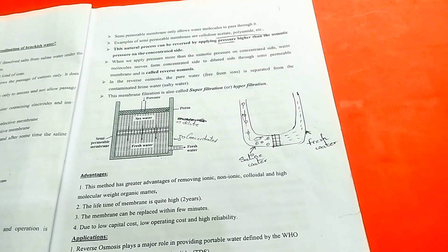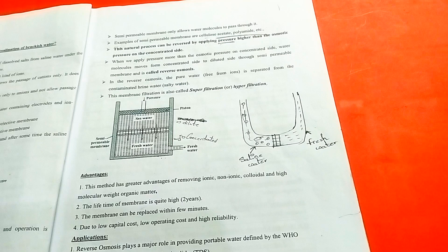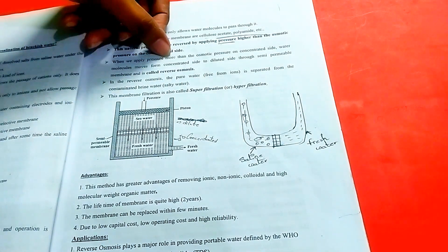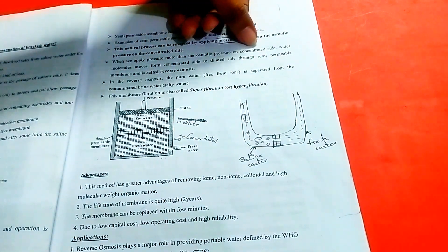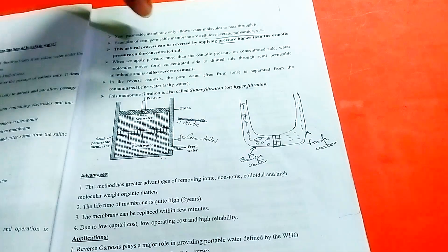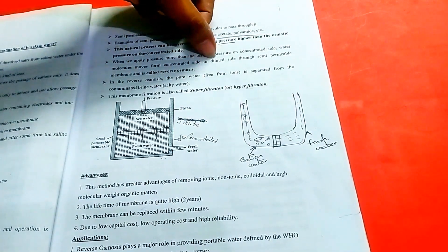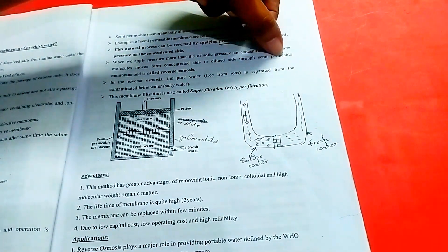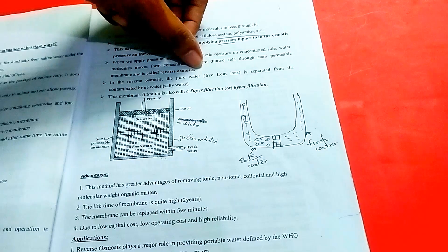What we see is reverse osmosis. When we apply pressure more than the osmotic pressure on the concentrated side, water molecules move from concentrated side to dilute side through semipermeable membrane. This is called reverse osmosis.